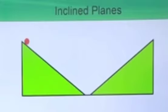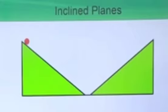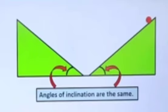The marble reaches the same height on the second plane as well. When the two planes are identical in their angle of inclination, the marble released from a point rolls down the first plane, climbs up the second plane to the right, and reaches the same height from where it was released. If the inclination of the planes on both sides are equal, then the marble will climb the same distance that it covered while rolling down.